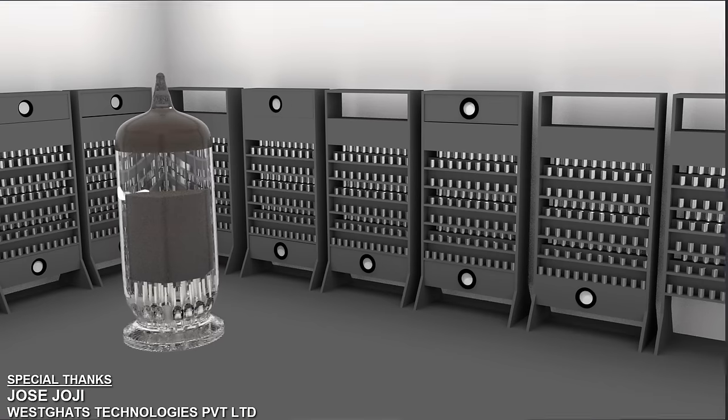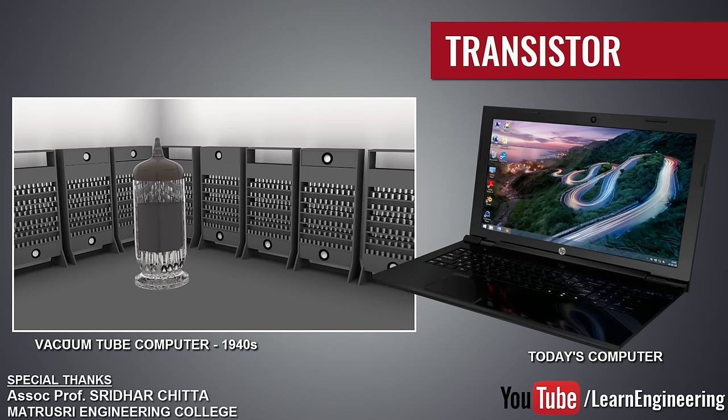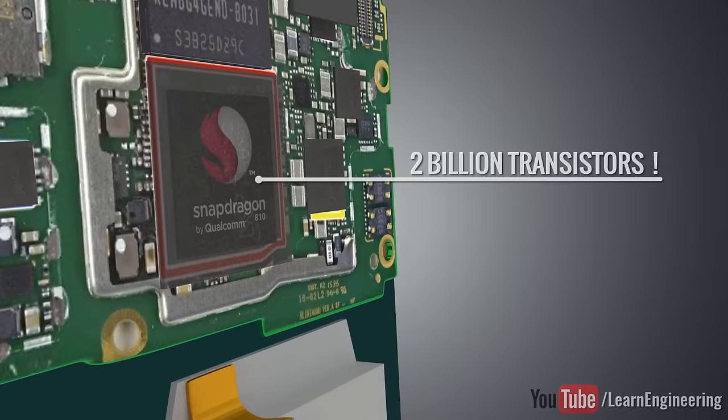The invention of transistors revolutionized human civilization like no other technology. At the heart of a smartphone lies a processor, and this processor holds about 2 billion transistors. What do these incredibly tiny devices do? How do they work?